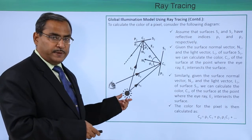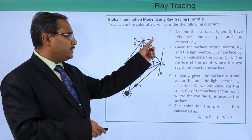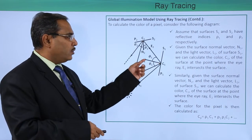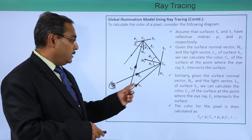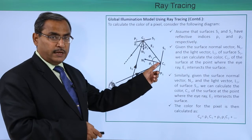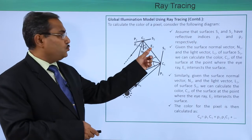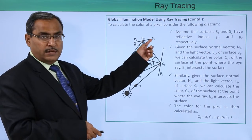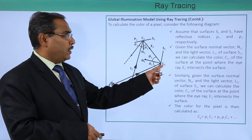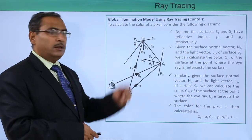Here we have the light source, the viewing position, and two surfaces S1 and S2 with reflective indexes rho1 and rho2 respectively. These are the surface normals N1 and N2. L1 is the light vector falling on the respective point on surface S1. Then it gets reflected as E2. C1 is the point on surface S1 and C2 is the point on surface S2.